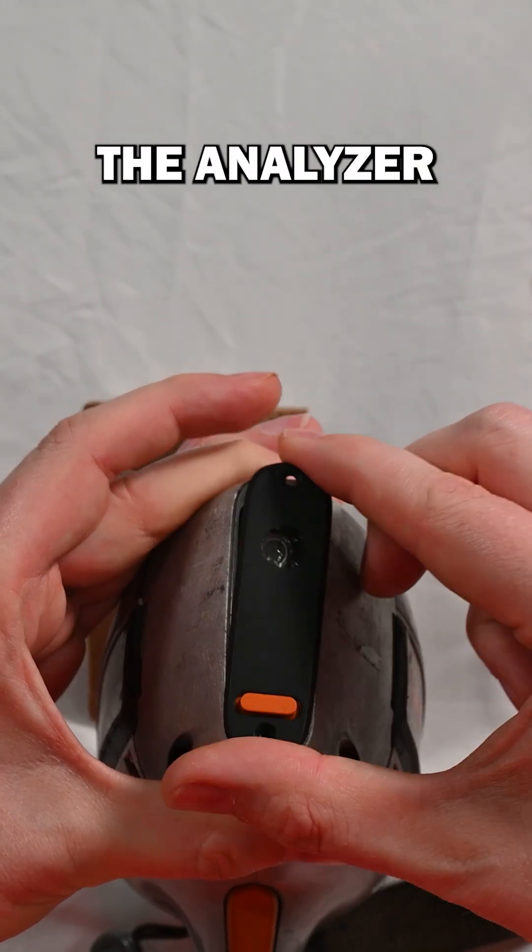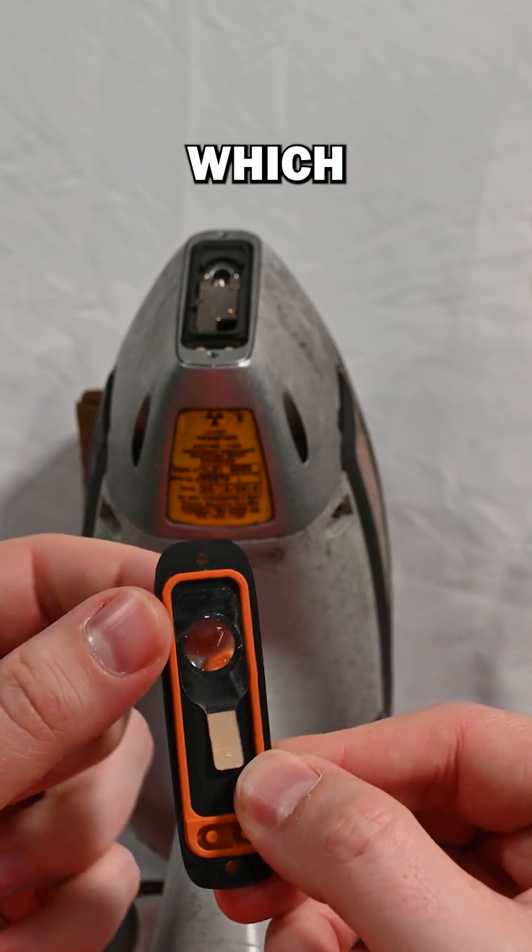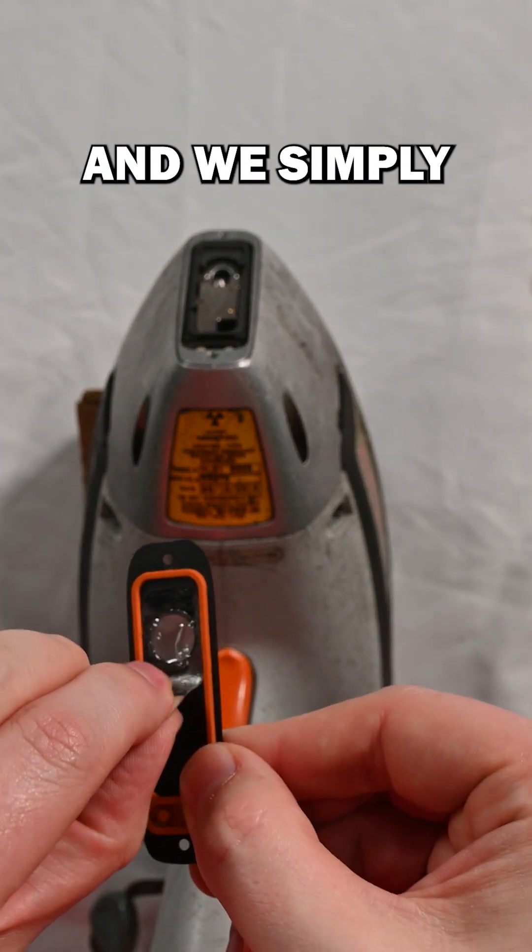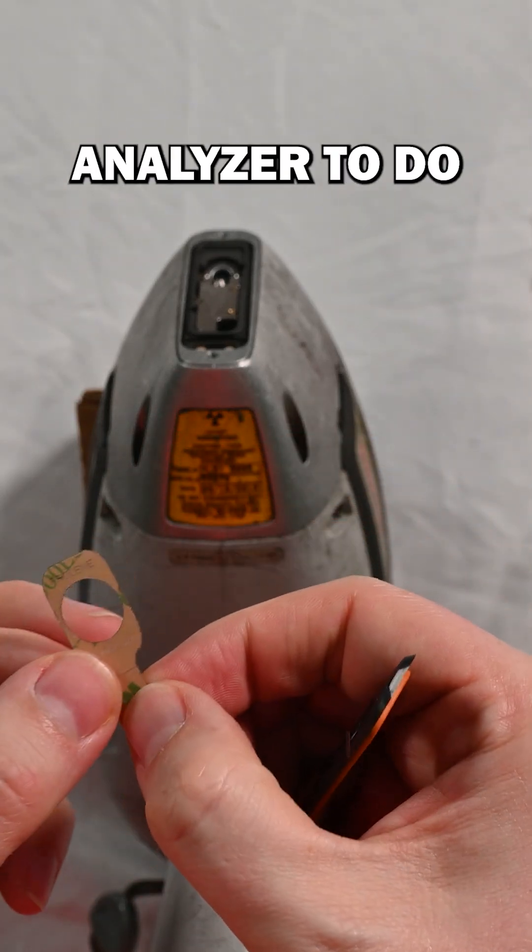Now that we've removed the screws, the analyzer faceplate should come right off. On the back of your faceplate is the old window which we can see has been ruptured, and we simply remove that window and we're going to put a new proline one on since we have a 900 series analyzer.